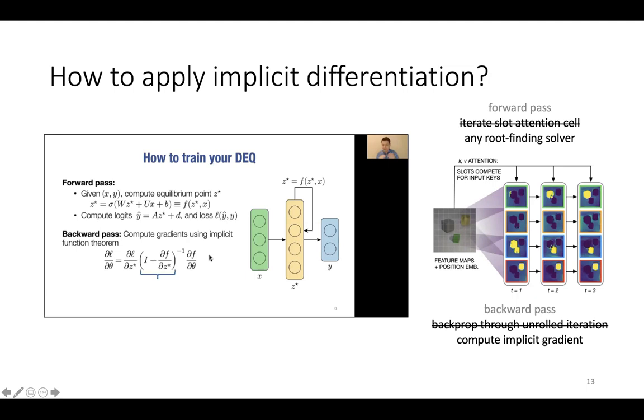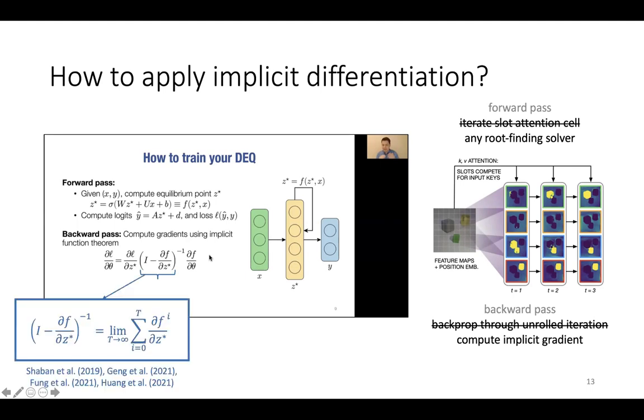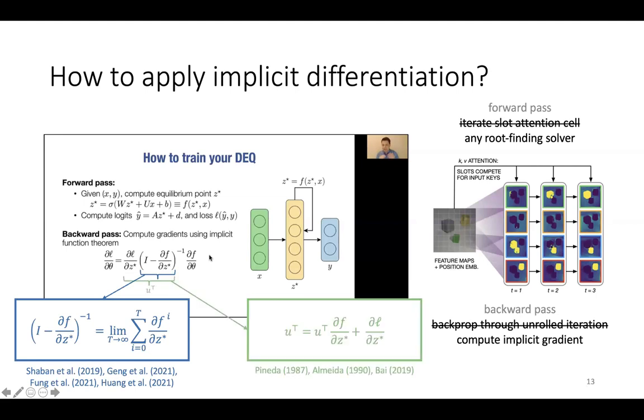The challenge is in computing the inverse Jacobian term here, which is expensive, so prior works have either approximated the term using a Neumann expansion, or used a root finding solver to solve another fixed point system.